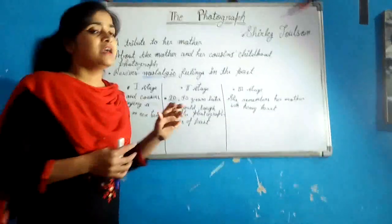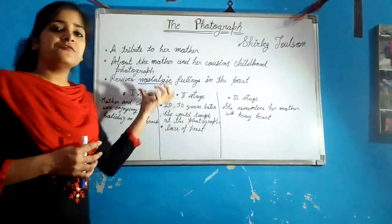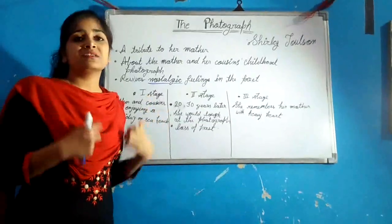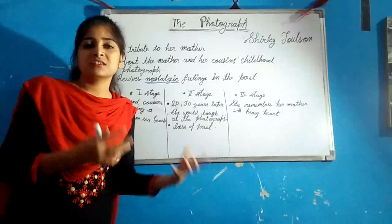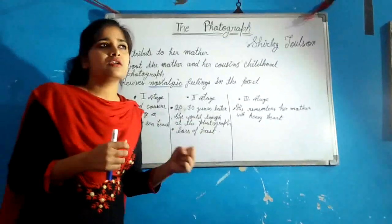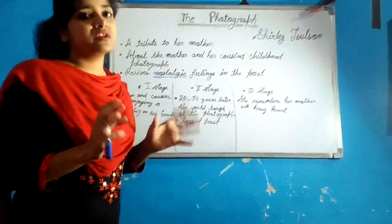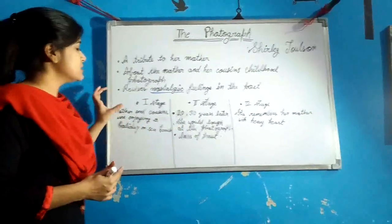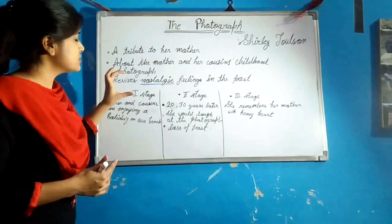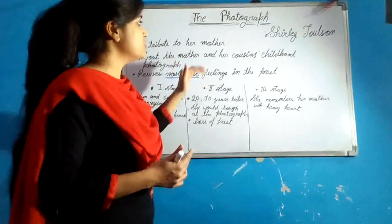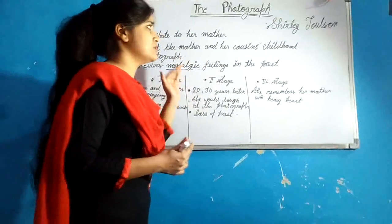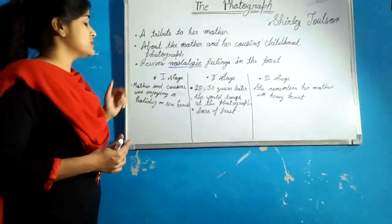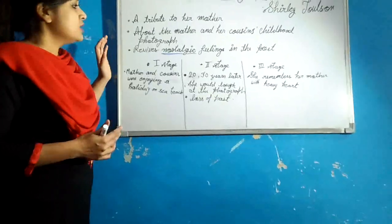What is nostalgic? It is a feeling when we start missing our past, especially our childhood or something which we lost in the past. So that is nostalgic, and in this poem she was feeling nostalgic in so many places.